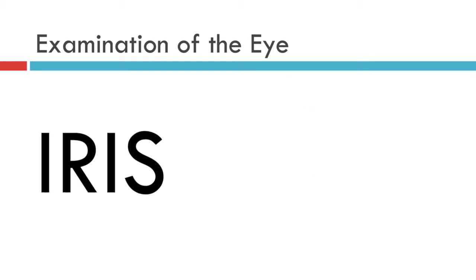There are only two reasons to examine the iris for non-specialists. Number one is to ensure that the pupil formed by the iris is round. If the pupil is not round, it may signify active or previous trauma, or active or previous inflammation.